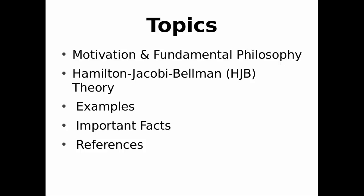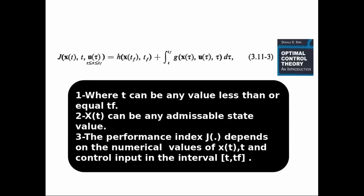Here we talk about the performance index or cost function. The general form is a function of x(t), time, and u(t), where x is the state vector and u is the control input. We have a terminal part, which is only a function of the final state and final time, and a trajectory part, which is a function of time, control input, and state.